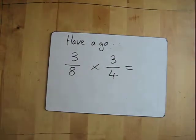Again, very simple. One for you to have a go at yourself. Three eighths times three quarters. If you want to pause it and have a go,